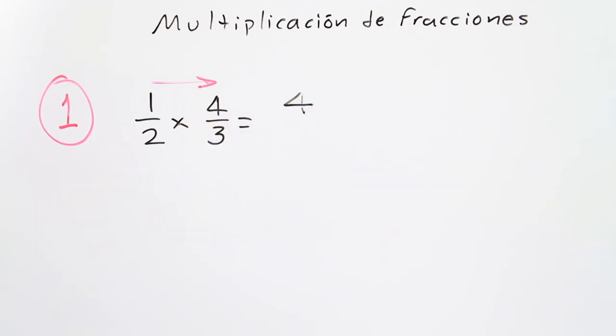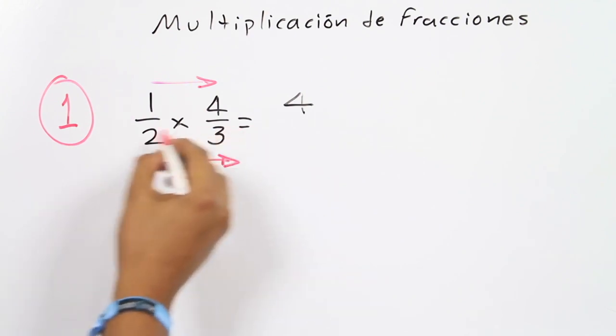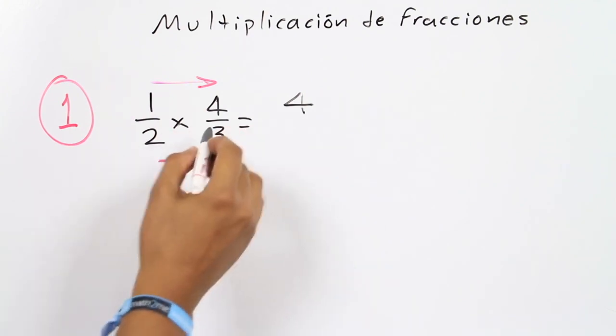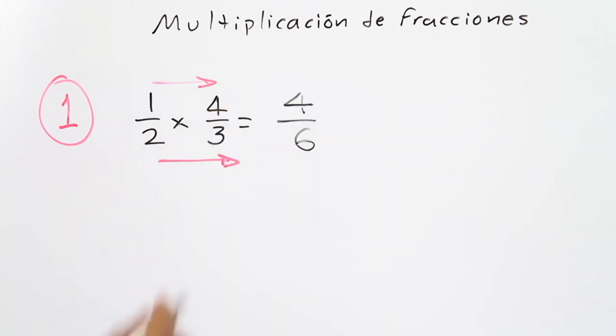Then you have to divide it by the multiplication of all the bottom numbers. In this case, 2 times 3 equals 6, so the answer is 4 over 6.